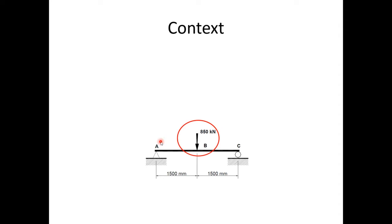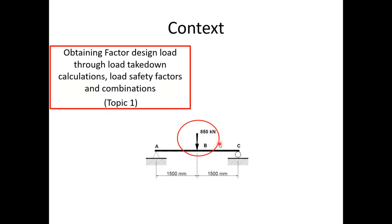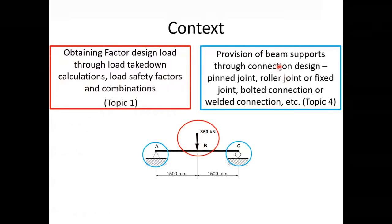Last week we looked at loading: calculating factored design loads through load takedowns and applying load safety factors and combinations. Dead loads — permanent in location and magnitude — are factored up by 1.35. Imposed loads — variable in magnitude and potentially location — are factored up by 1.35 or 1.5. This gives our load combination. Load can come from flooring through one beam into another, or from a column carrying floor loads from above.